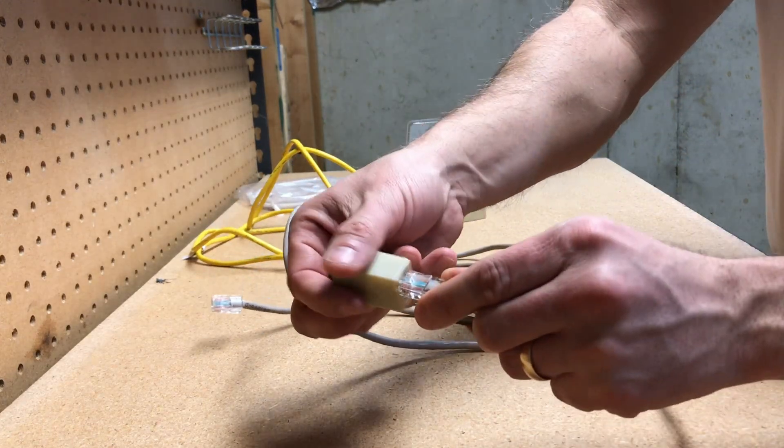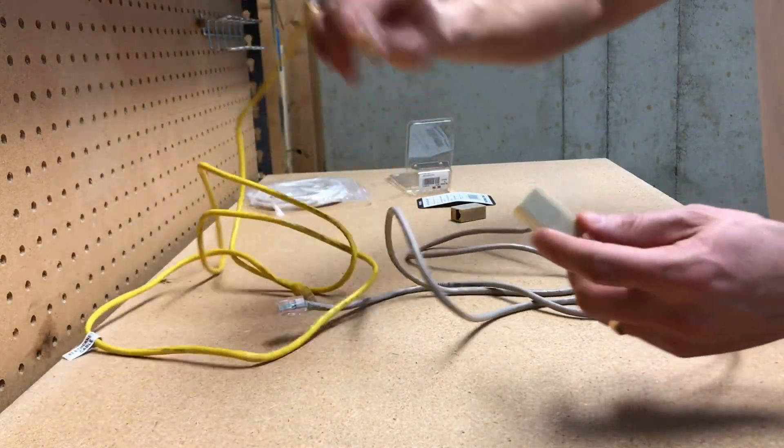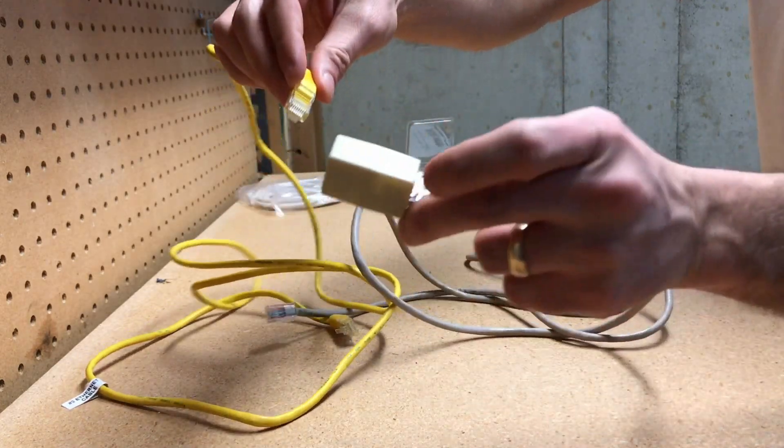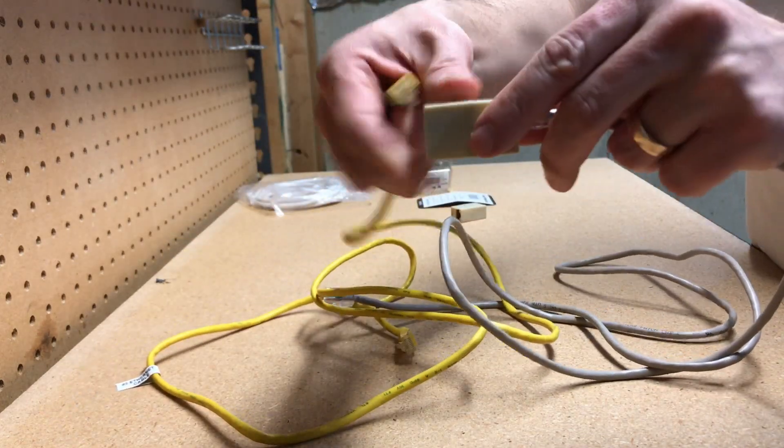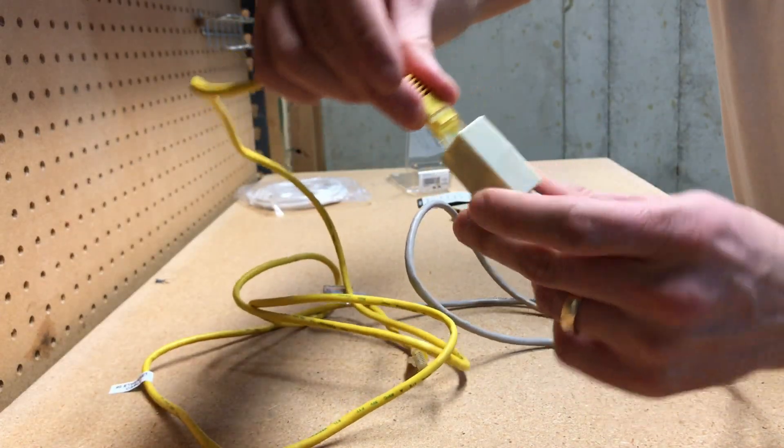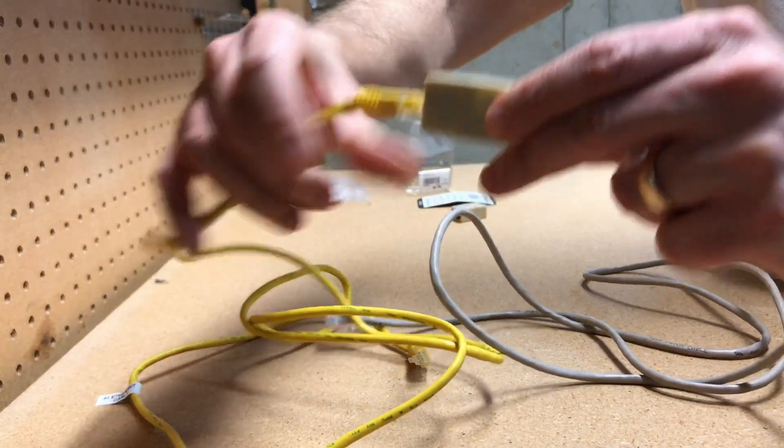Just snap them in. I'd really recommend making sure these tabs are on to get a good connection. One goes in this way and another one goes in upside down - that's how they work. We got high and low. This is great for gamers on a budget too.